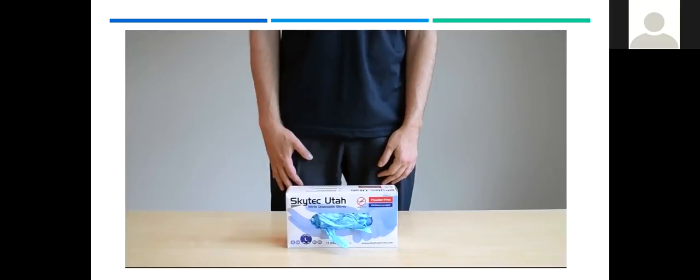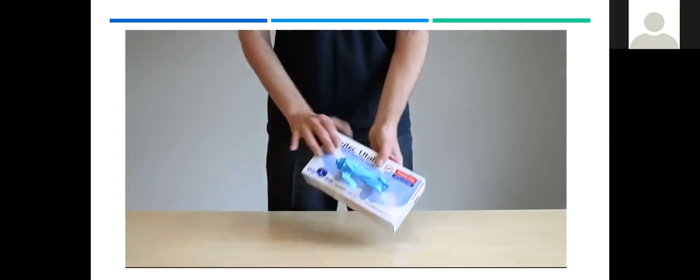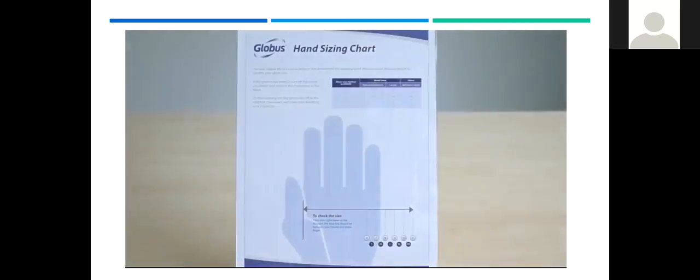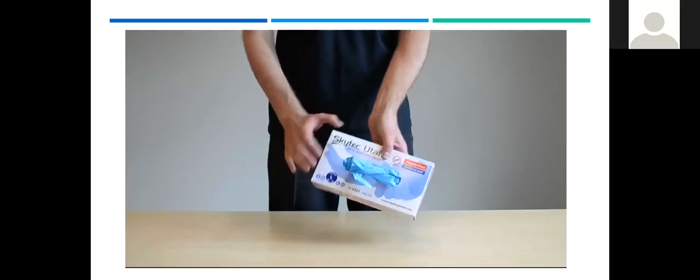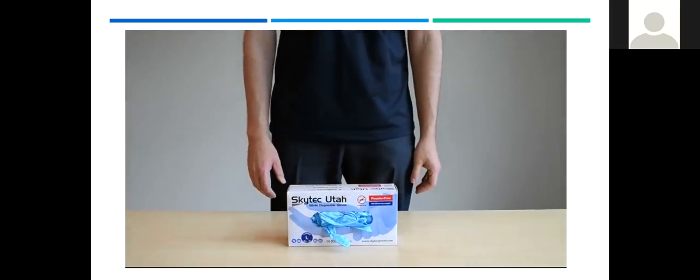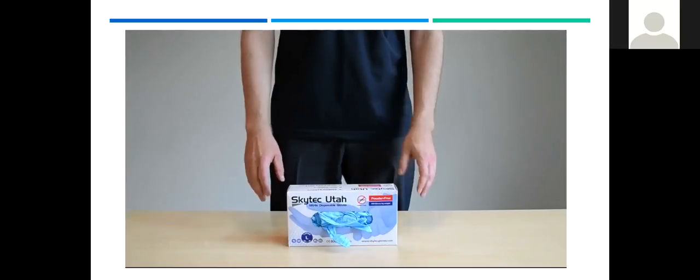Before using a disposable glove, always ensure the right type is chosen for the type of work and potential hazards. Make sure the right size of glove is used. Measure your hand using a glove sizing chart. Wearing the right size will reduce the potential for tearing and also ensure freedom of movement for the hand. Remove any jewelry that may rip the gloves, and wash your hands before donning gloves, as well as after each glove change.